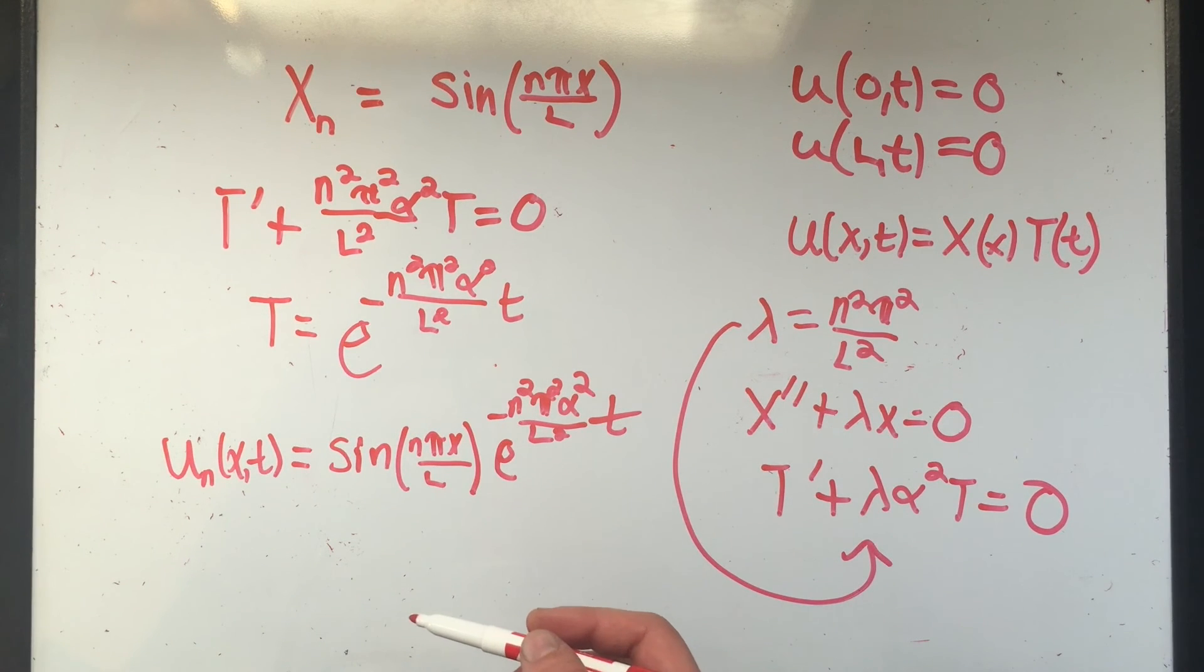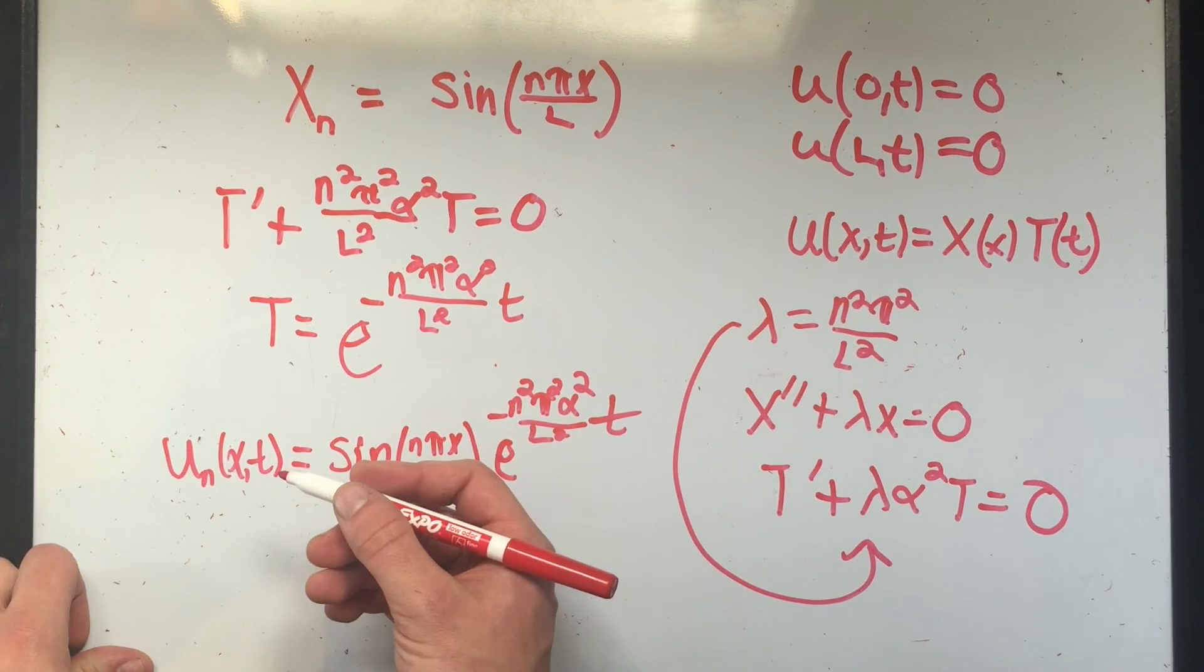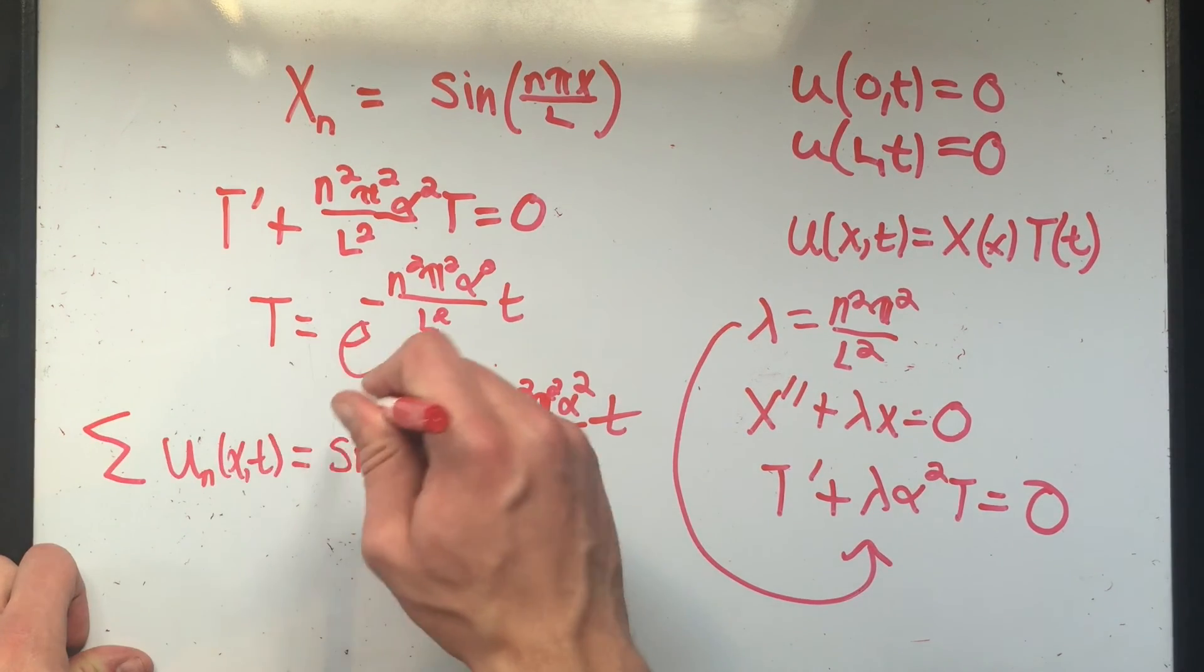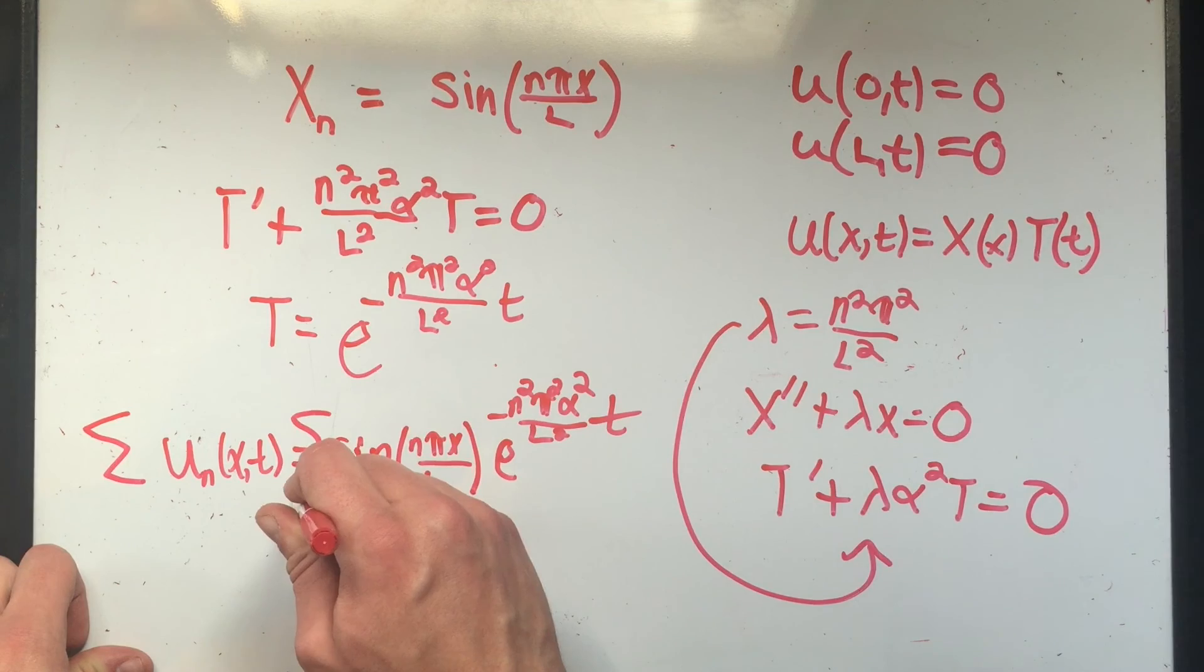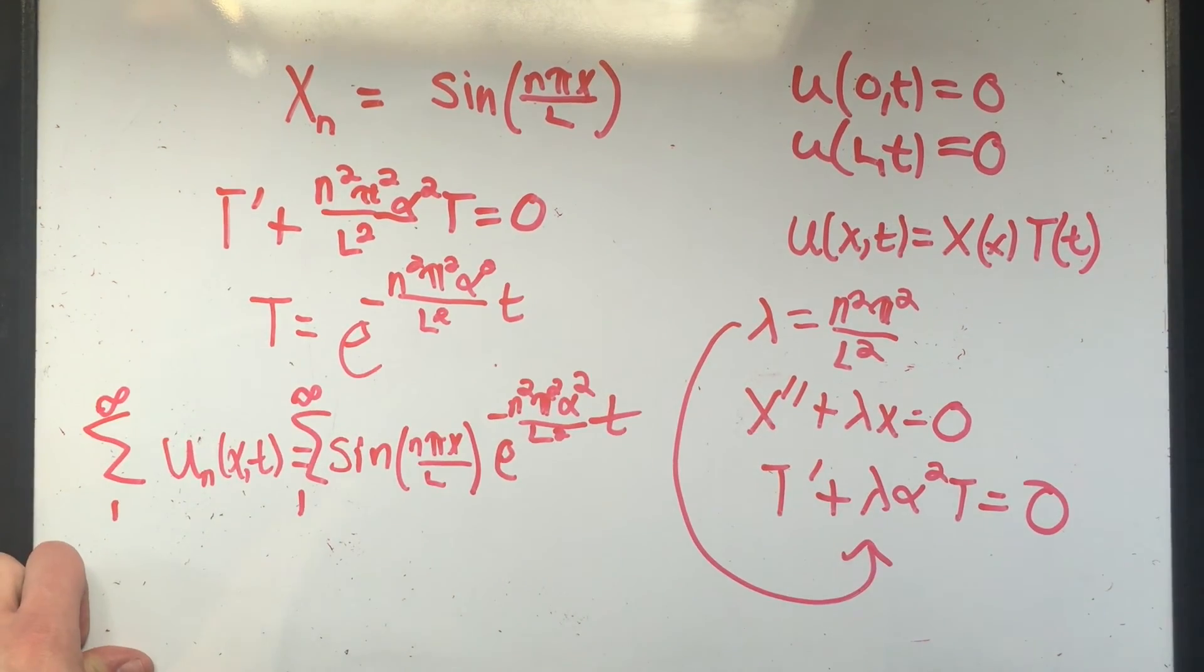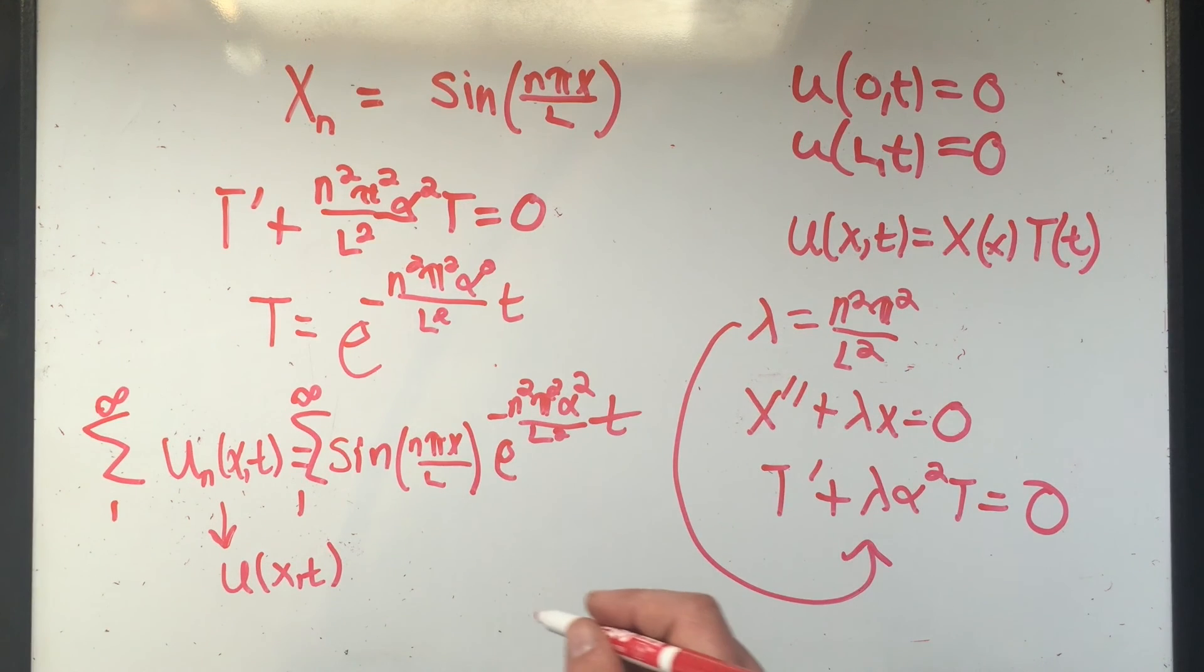But we can do a little better. See, this is true for n equals one, two, three, four, five, six, seven, eight. What if I want, what if I just want a cleaner solution? What if I sum both sides forever? What if I sum n equals one to infinity? Well, if I sum all the un's, if I sum all the partial solutions, I'll just give me u.